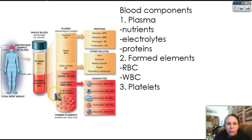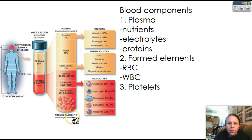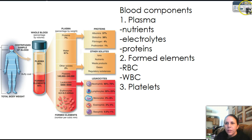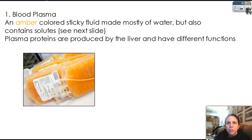And then we have our erythrocytes, which are our red blood cells right here. And this is how many blood cells there are per cubic centimeter, which is one milliliter. So as you can see, there's a lot. So now let's take a look at just plasma. The other sections are going to take many, many more slides, so let's just deal with plasma for right now.